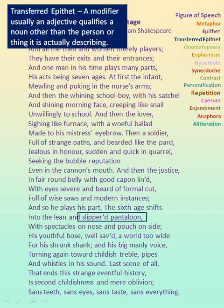'Lean and slippered pantaloon' — pantaloon refers to trousers gathered at the ankles, generally worn by women. Here, pantaloon is described using the words lean and slippered. Actually, it is not the pantaloon that is lean and slippered; instead, it is the man who has become lean and is wearing a slipper. Hence, transferred epithet. 'Youthful hose' — the pants are not youthful; instead, the man who wears them is youthful. Hence, the quality is getting transferred. So the figure of speech is transferred epithet.